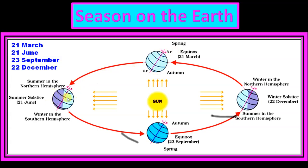After 3 months, sun rays fall on the Tropic of Cancer. The northern hemisphere is tilted a little bit toward the sun, so sun rays fall directly on the Tropic of Cancer. This condition is known as summer solstice in the northern hemisphere.